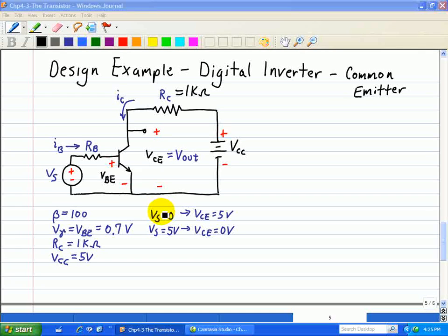So to meet the first condition, that is Vs equals zero such that Vc equals 5 volts, the transistor must be in cutoff mode since the required output is Vce equal 5 volts, which is equal to the voltage open circuit voltage, which is equal to Vcc.